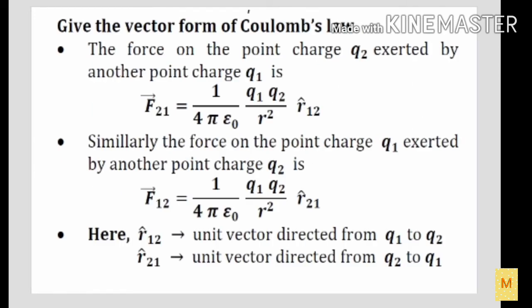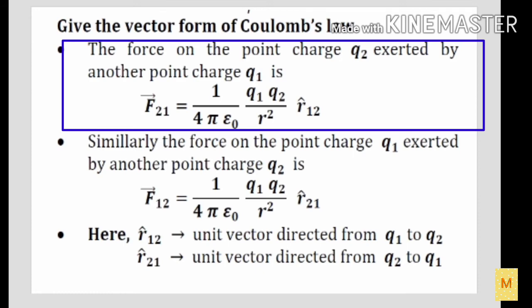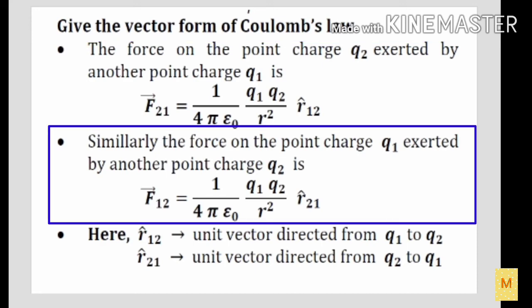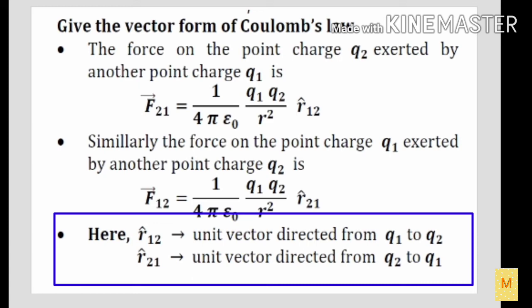We are going to see the vector form of Coulomb's law. The force on point charge q2 exerted by another point charge q1 is represented as F₂₁ = 1/(4πε₀) × q1q2/r² × r̂₁₂, where r̂₁₂ represents the unit vector directed from charge q1 to charge q2. Similarly, the force on point charge q1 exerted by another point charge q2 is F₁₂ = 1/(4πε₀) × q1q2/r² × r̂₂₁, where r̂₂₁ represents the unit vector directed from charge q2 to charge q1.